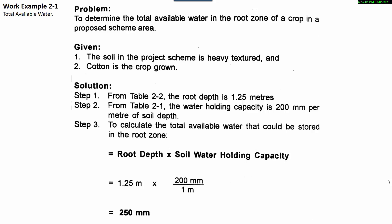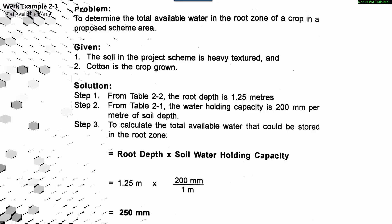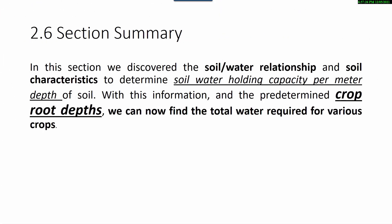For example, to determine the total available water in the root zone of a crop in a proposed scheme area: the soil has heavy texture and cotton is the crop. From the root depth table, the root depth is 1.25 meters. From the water holding capacity table, the water holding capacity is 200 mm per meter of soil depth. To calculate the total available water stored in the root zone, we multiply 1.25 by 200 mm to get 250 mm — the available water depth that could be stored in the root zone. In this section, we discovered the soil-water relationship and soil characteristics to determine soil water holding capacity per meter depth of soil. With this information and the predetermined crop root depth, we can find the total water required for various crops.